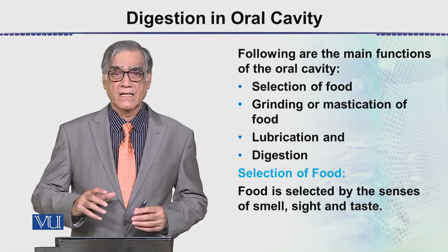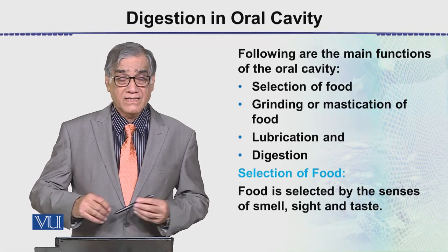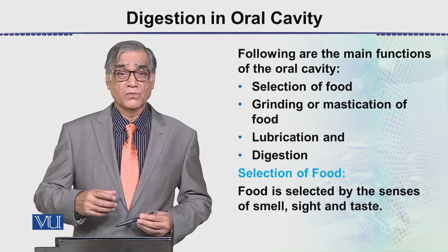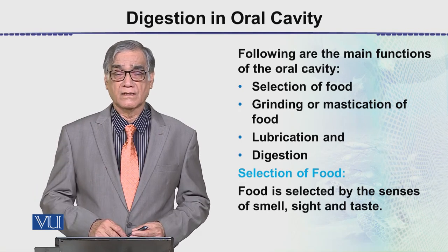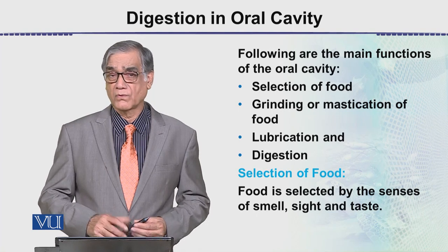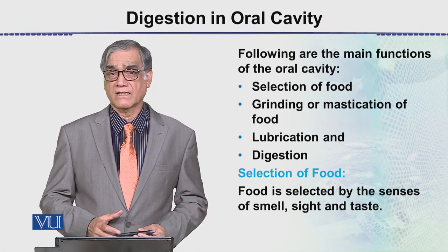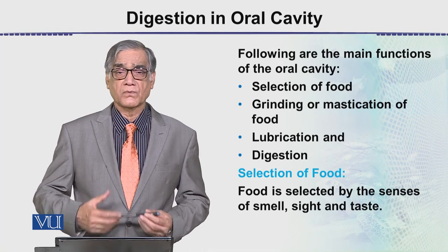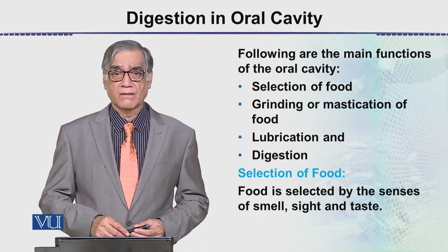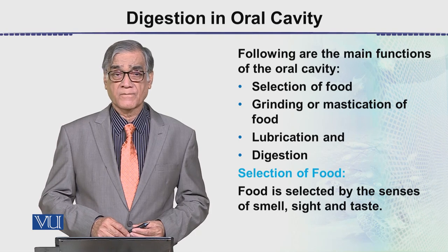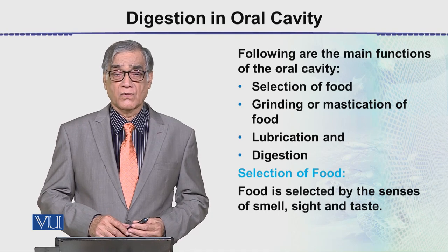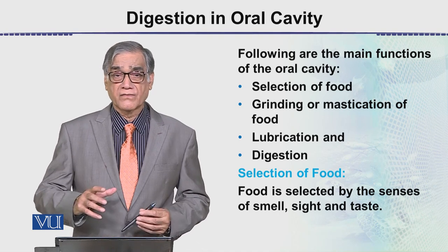Lubrication means the food is mixed up with mucus. And where does the mucus come from? It is produced by the mucus glands which are located in different regions, and from there their ducts open into the mouth cavity.